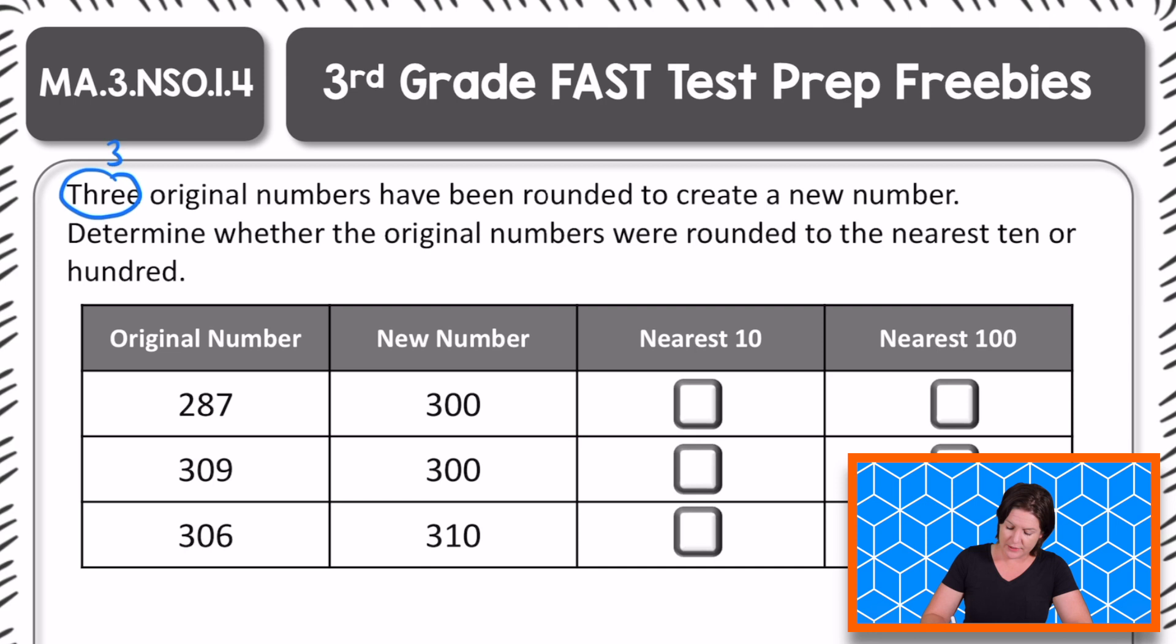It says that three original numbers have been rounded to create a new number. We need to determine whether the original numbers were rounded to the nearest 10 or to the nearest 100.